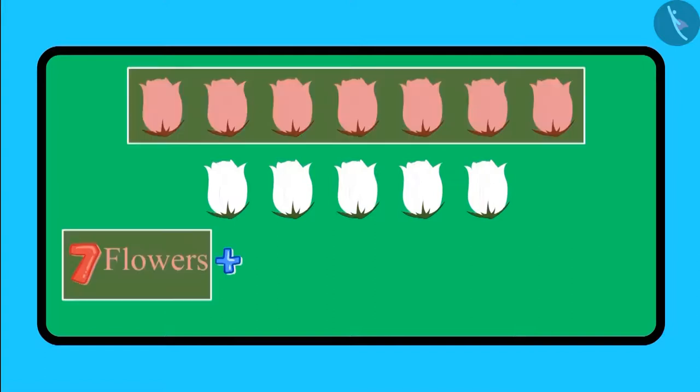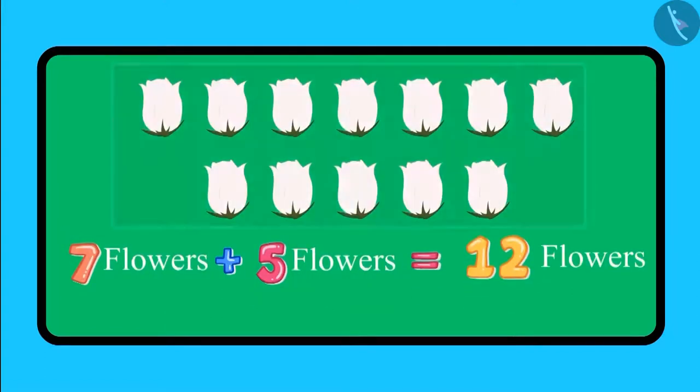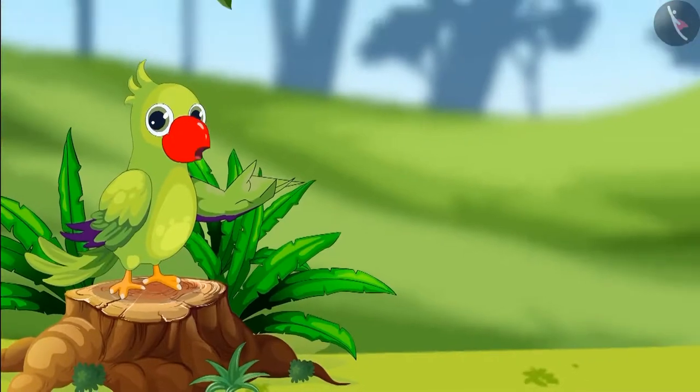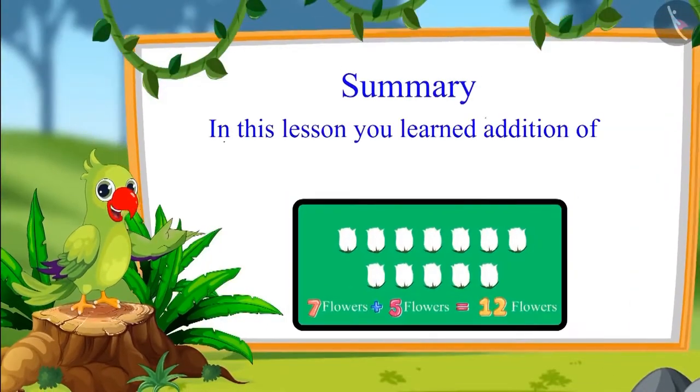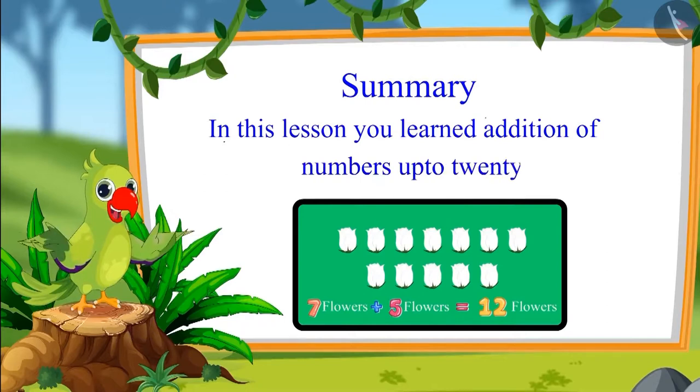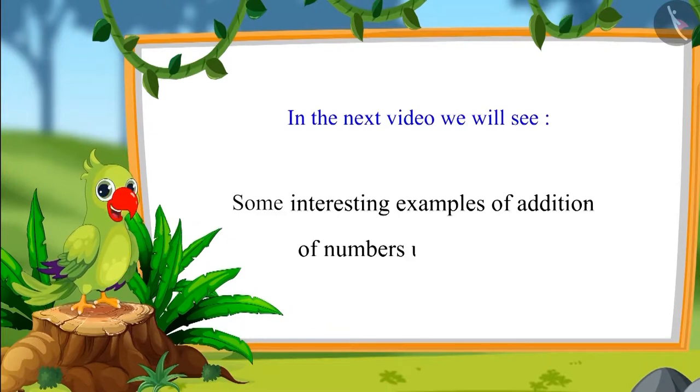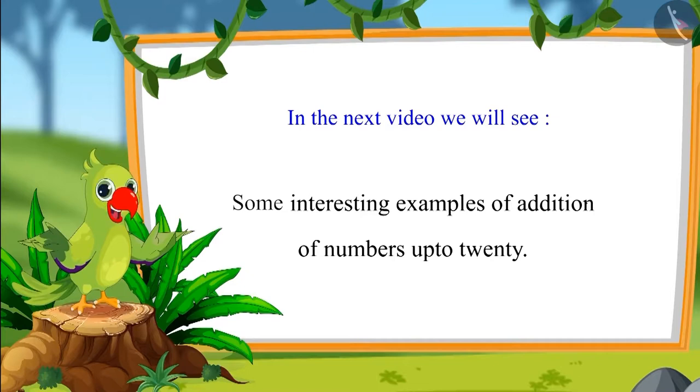So children, 7 flowers added to 5 flowers make a total of 12 flowers. So children, that is all for today. In this lesson, you learned to add numbers up to 20. In the next video, we will see some more interesting examples of addition of numbers up to 20. Until then, bye friends.